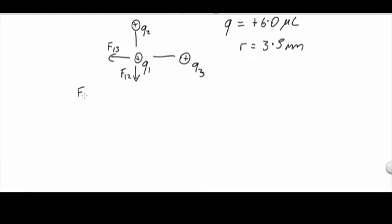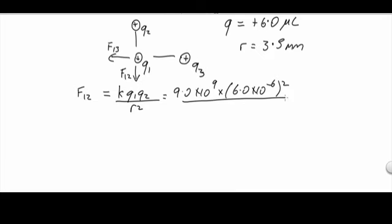So let's start with force F12. I'll just abbreviate, so it's K Q1 Q2 over R squared. So 9 by 10 to the 9 times 6 by 10 to the minus 6 squared over 3.5 by 10 to the minus 3 squared.